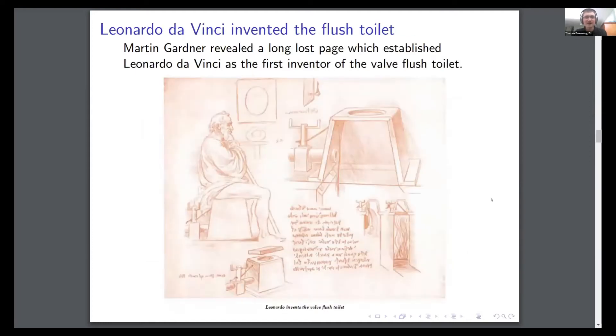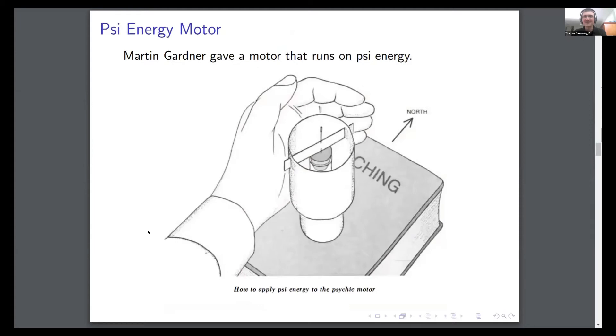And then the last two are also interesting. This one was one of the more humorous ones. Apparently there was this long-lost page from Leonardo da Vinci demonstrating he was the inventor of the valve flush toilet. This isn't actually real, but it looks pretty convincing. And the last one, it's one of these physics things where movements appear to come from psi energy, but really they come from slight air currents.